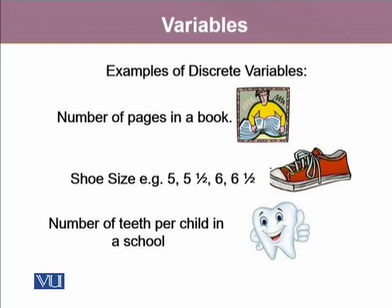Another example is shoe size — it could be five, five and a half, six, six and a half. There is a common perception that any variable that cannot take decimal values is a discrete variable, but that is not quite right. Discrete variables can take values at certain decimal points; the key is that between those points no other values exist — like 5 and 5.5 being standard shoe sizes with no value like 5.25 or 5.35. Similarly, number of teeth per child in a school varies, but we always count one tooth, two teeth, and so on — we don't say 1.5 or 1.25 teeth.